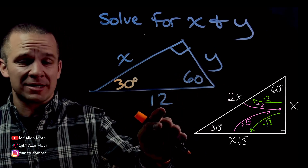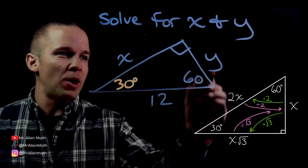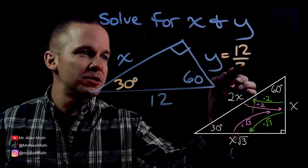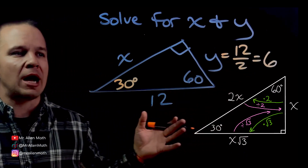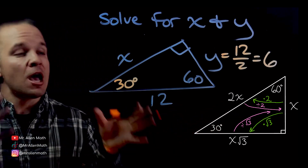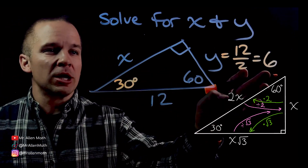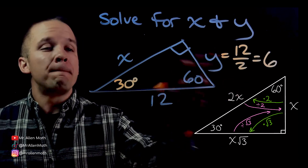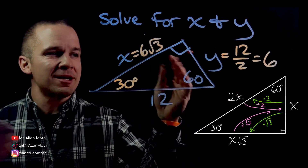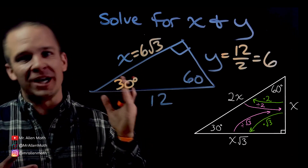This times two gives me the hypotenuse, so dividing by two gives me the short side. What's 12 divided by two? 12 divided by two is six, so Y equals six. Now with my short side, I can multiply by root three to get X — six root three. I've got X and Y. That's what I'm talking about. We're done.